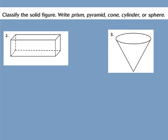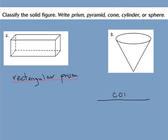Go ahead and write it down now. For question two, you should have written rectangular prism, because the base is a rectangle and all the faces are rectangles. For question three, you should have written cone, because it has a circular base and the curved surface comes to a vertex.